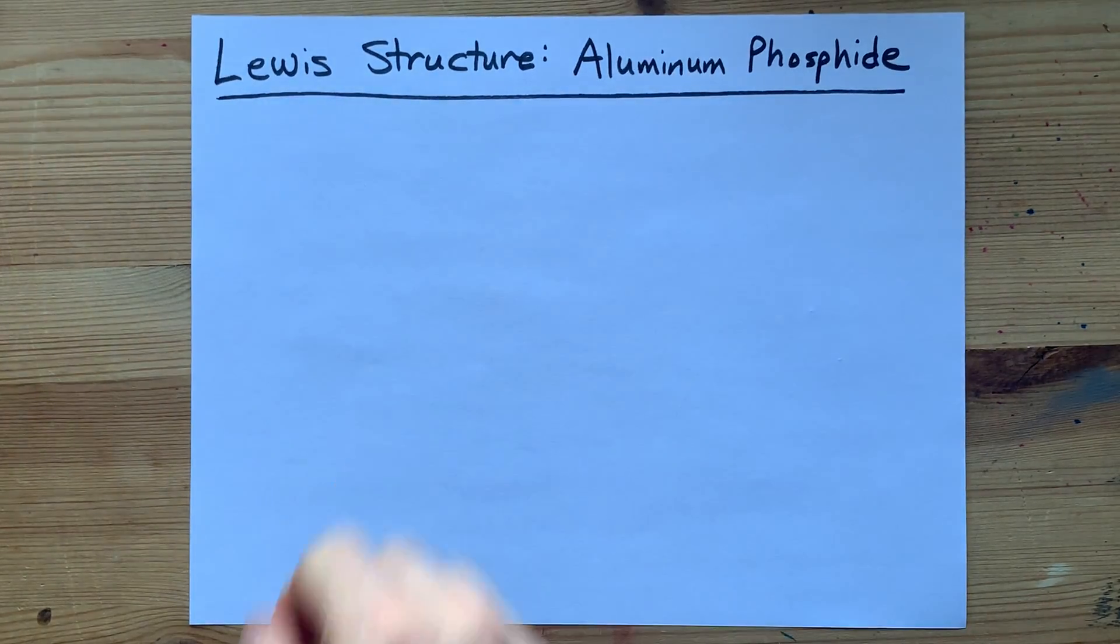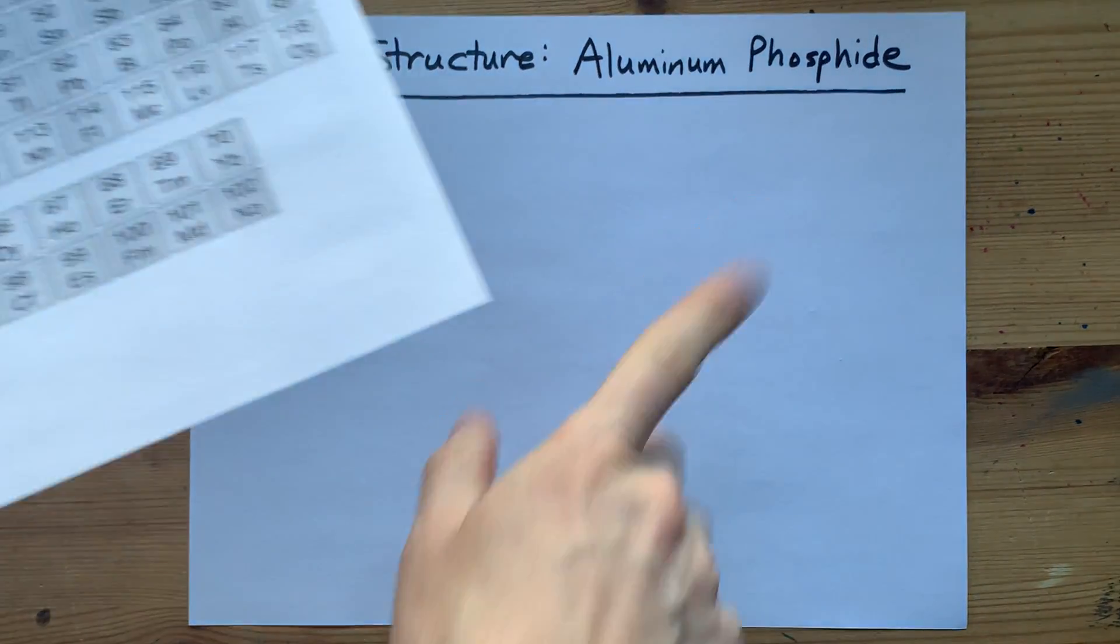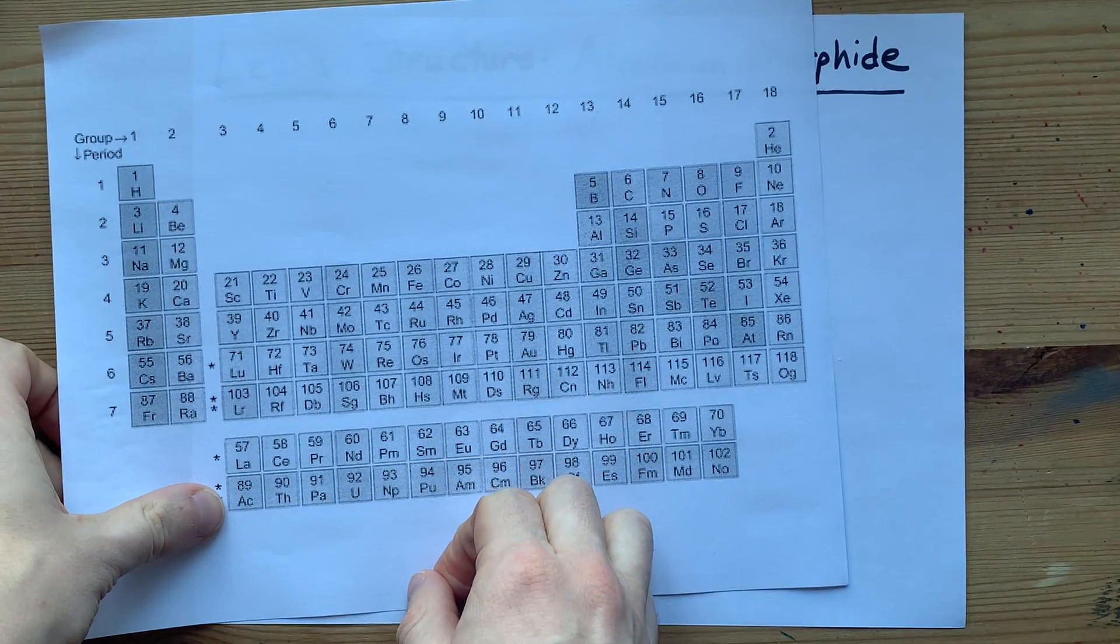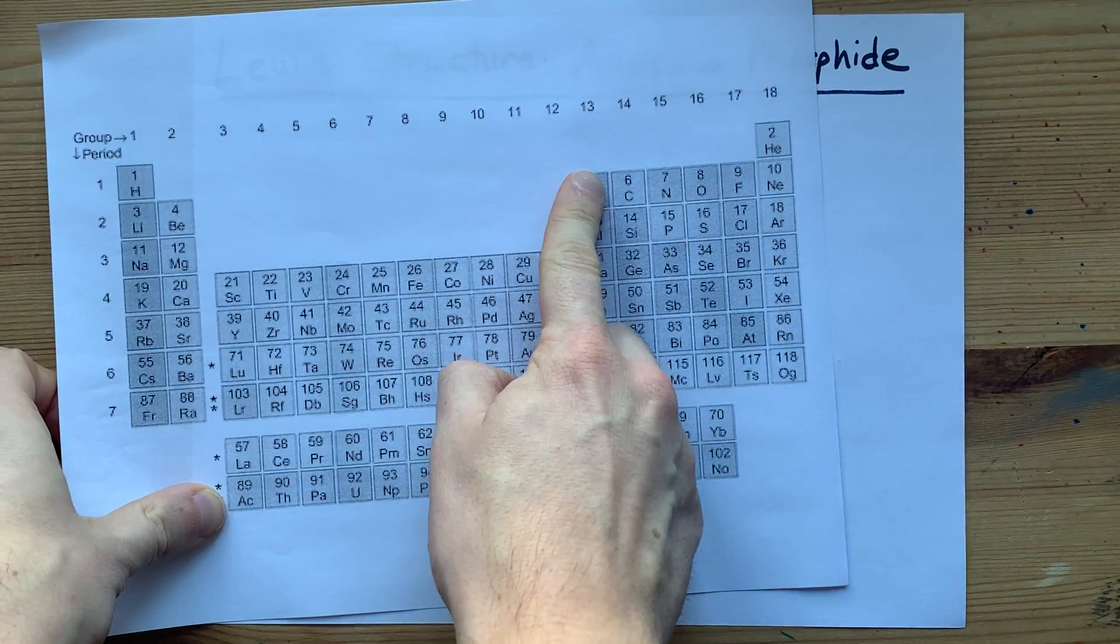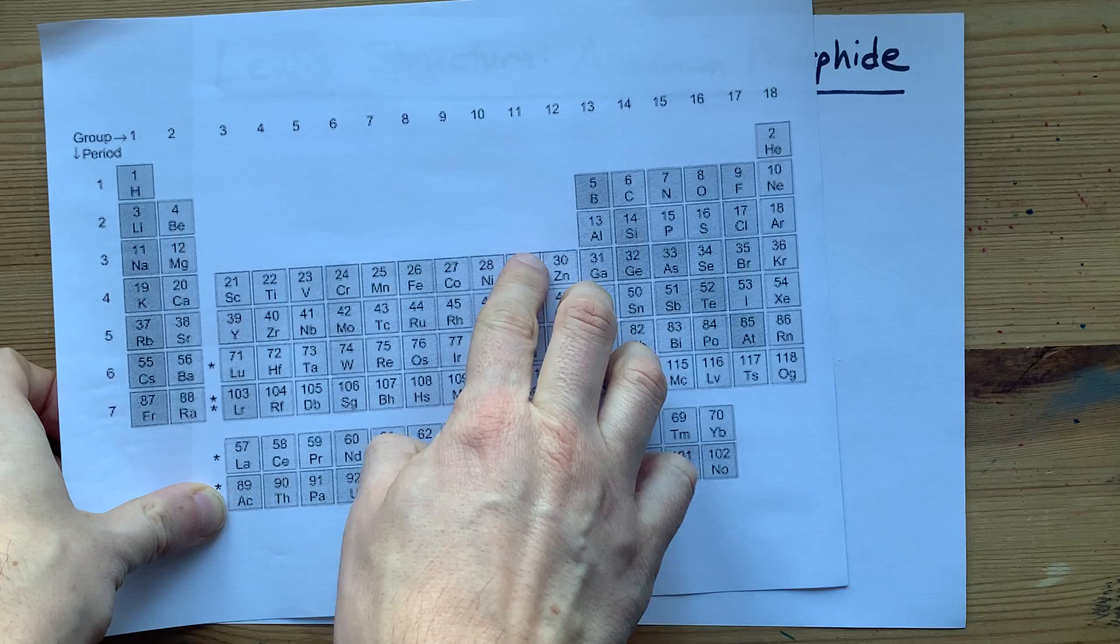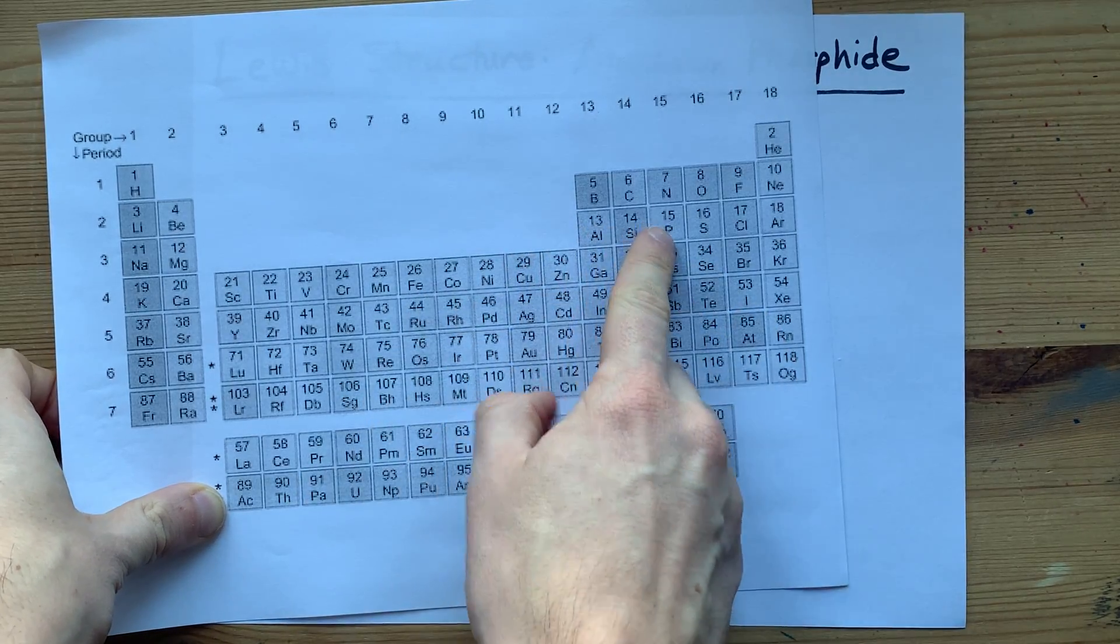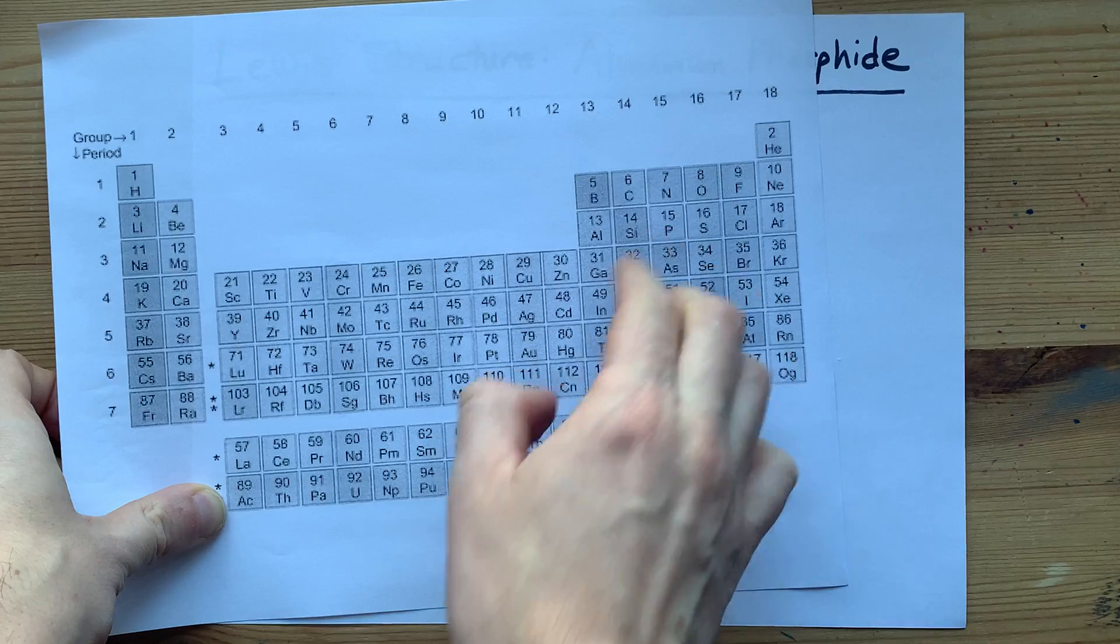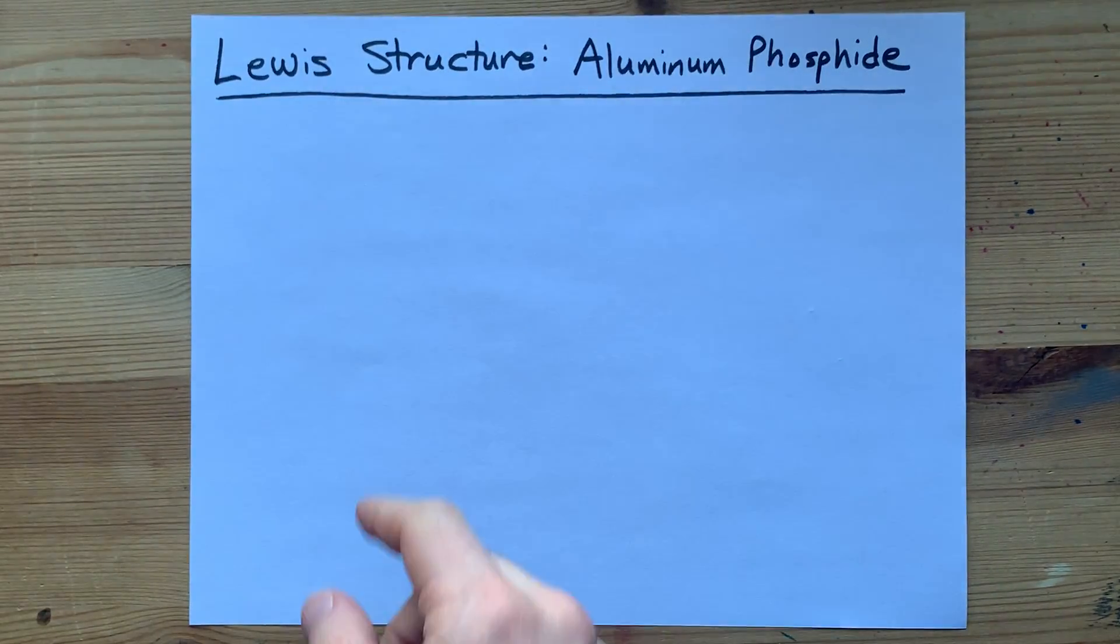The Lewis structure of aluminum phosphide is pretty straightforward once I show you why. Aluminum is on the left-hand side of this staircase, so it's a metal. Phosphorus is on the right-hand side of that staircase, so it's a non-metal.